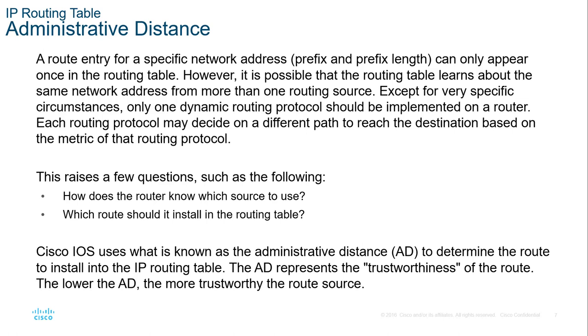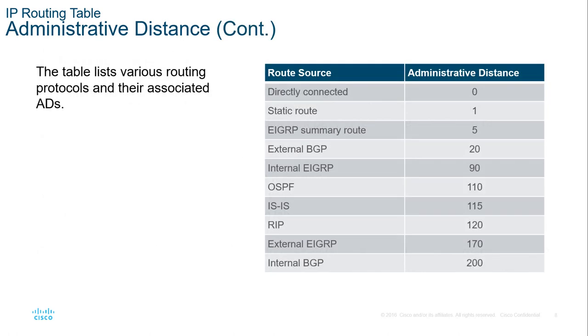There are predefined trustworthiness values or AD values that you should know. You should understand that if we are talking an AD value of 110, that's going to be OSPF. If we're talking an AD measure of 90, that will be EIGRP. On the Cisco exam, they will expect you to know the AD values. And again, the lower the value, the better.